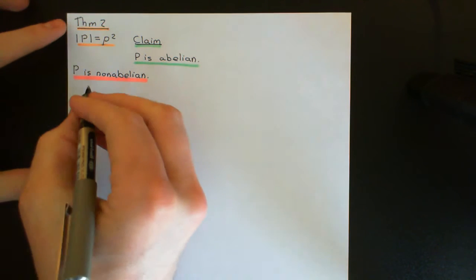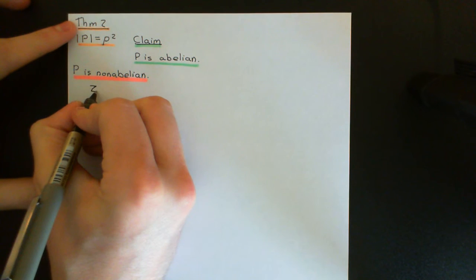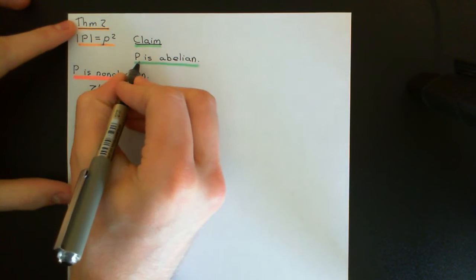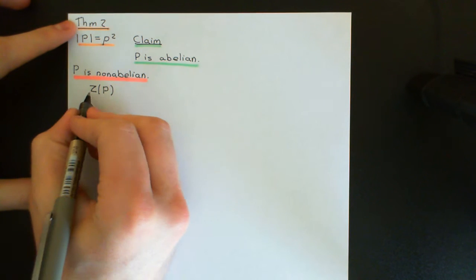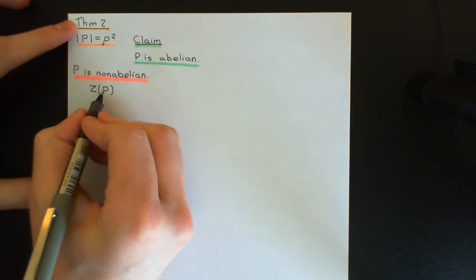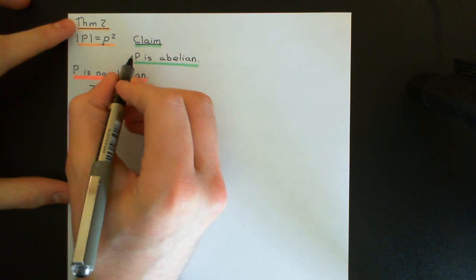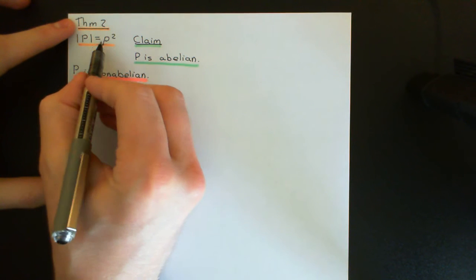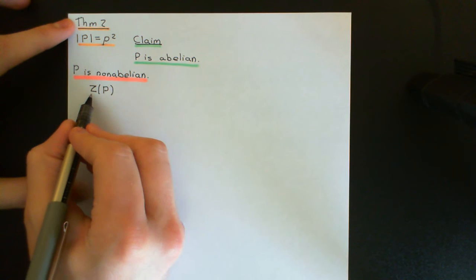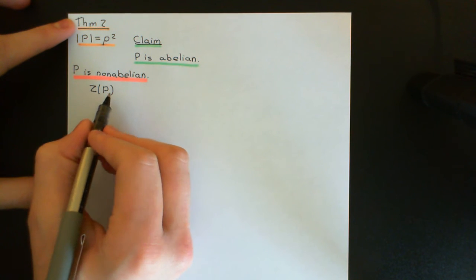By assuming P is non-abelian, we know the centre of the group is not equal to the entire group. The centre of the group is always a subgroup, and by Lagrange's theorem, the order of a subgroup must divide the order of the group. The order of the group is P squared here, so the order of the centre has three options: 1, P, or P squared.